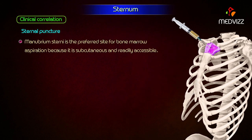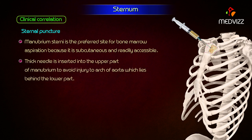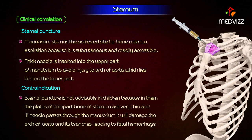The manubrium sterni is the preferred site for bone marrow aspiration because it is subcutaneous and readily accessible. The bone marrow sample is required for hematological examination. A thick needle is inserted into the upper part of the manubrium to avoid injury to the arch of the aorta, which lies behind its lower part. Sternal puncture is not advisable in children because the plates of compact bone are very thin, and if the needle passes through the manubrium, it will damage the arch of the aorta and its branches, leading to fatal hemorrhage.